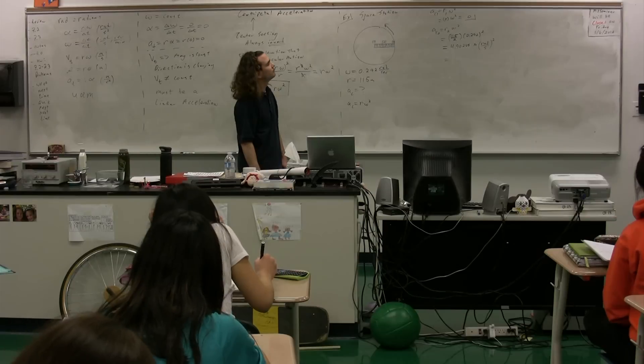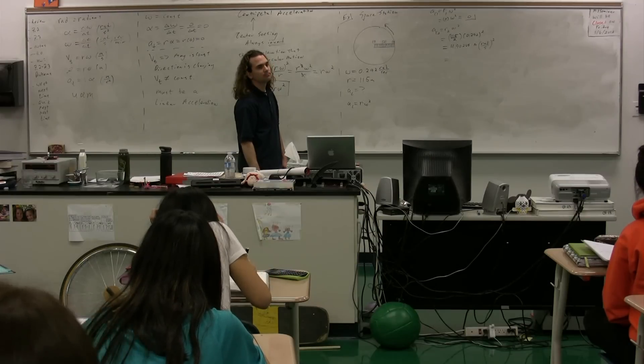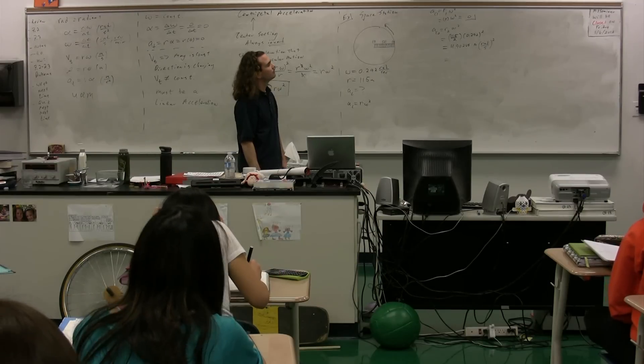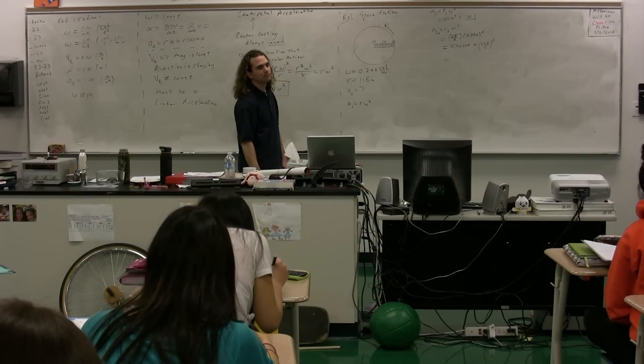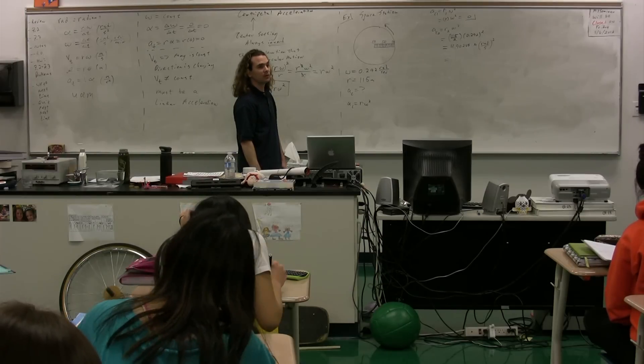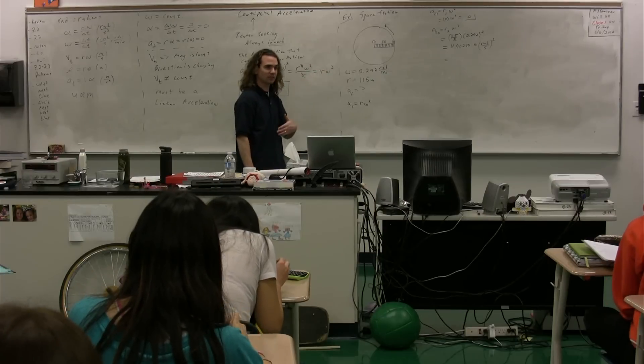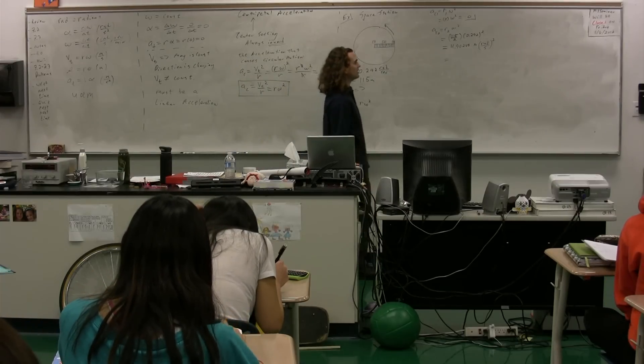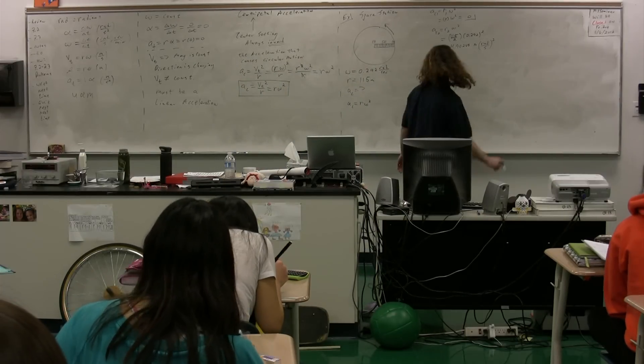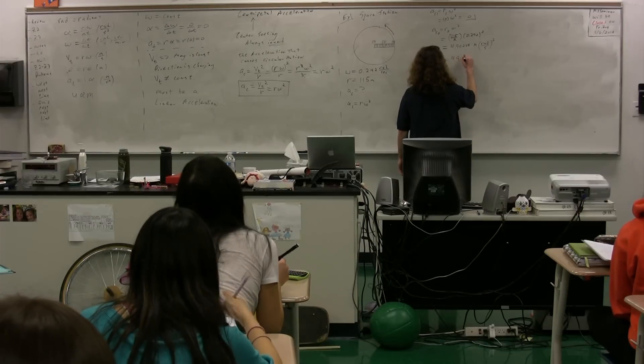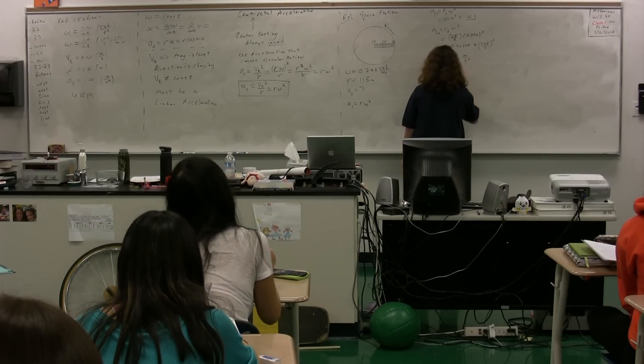Radians times, sorry, that's going to be, that would be meters per second. It works out to be meters times radians squared divided by second squared. But as we showed last time, radians are dimensionless, so we can simply cancel them out.